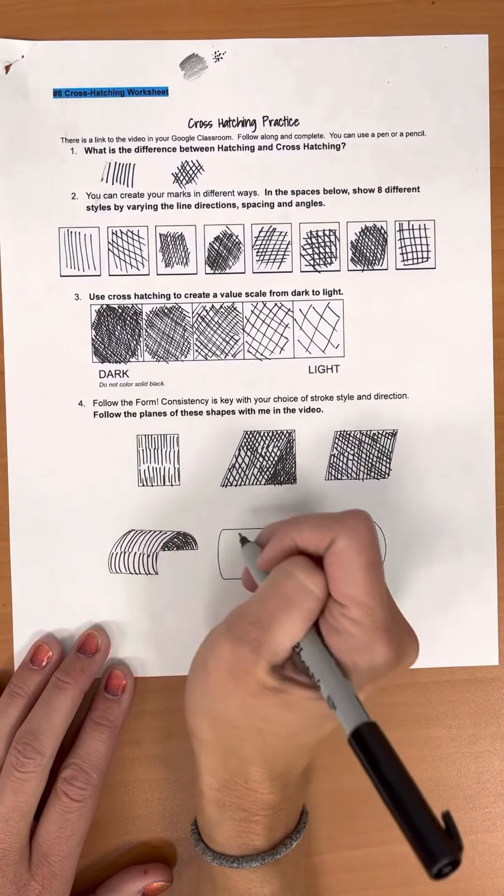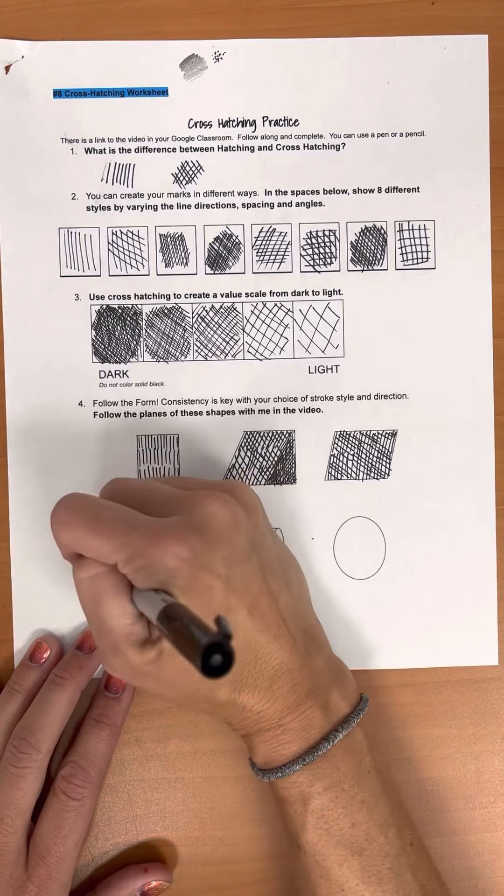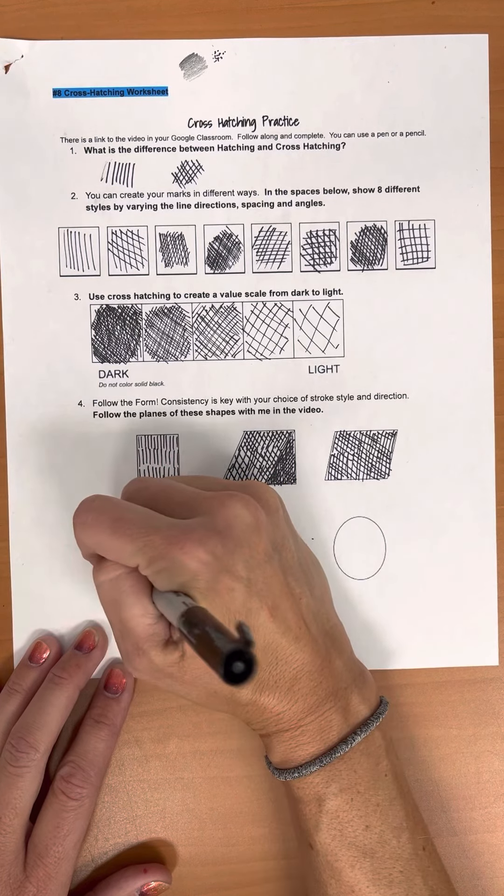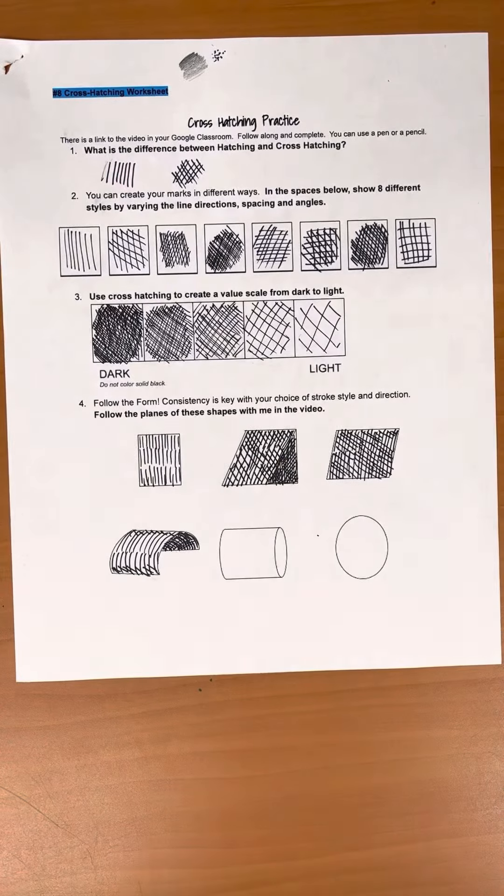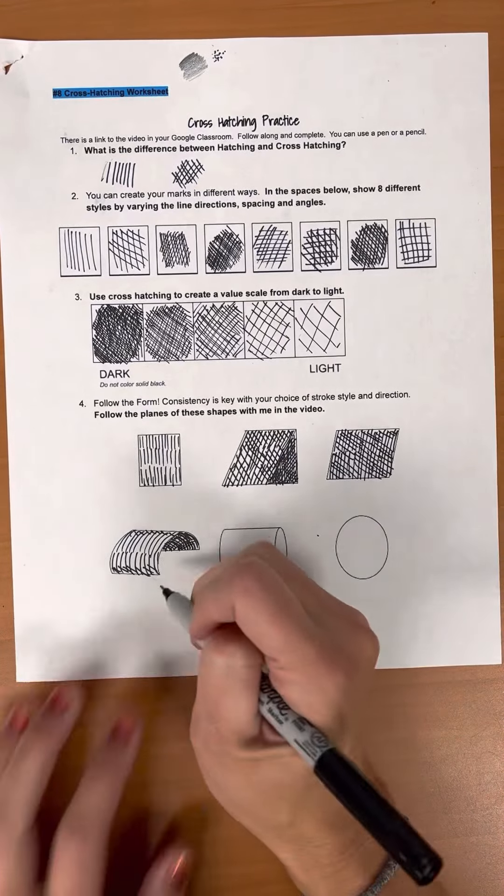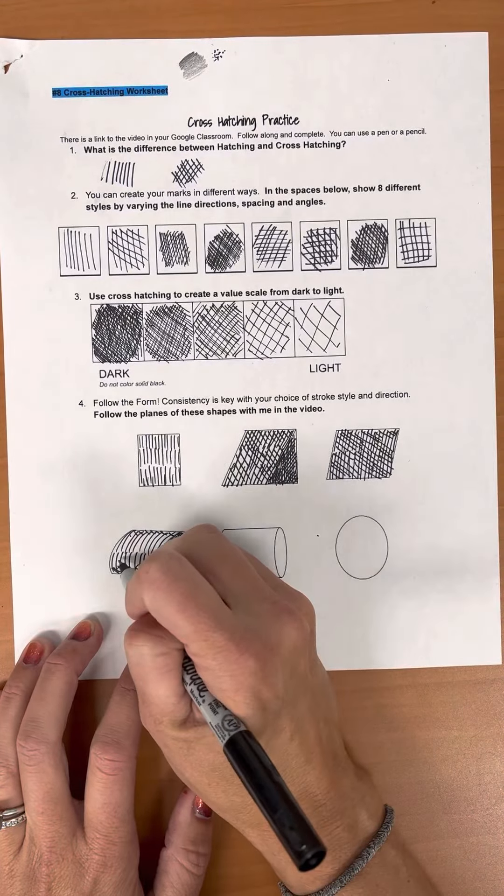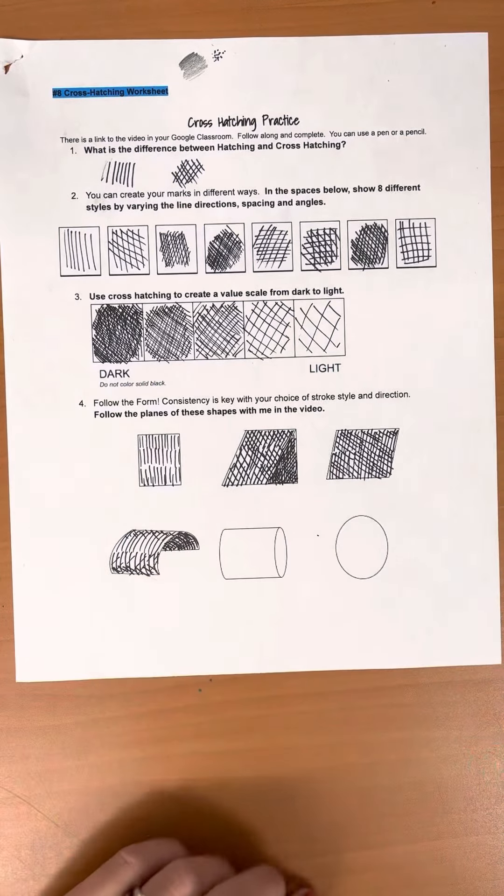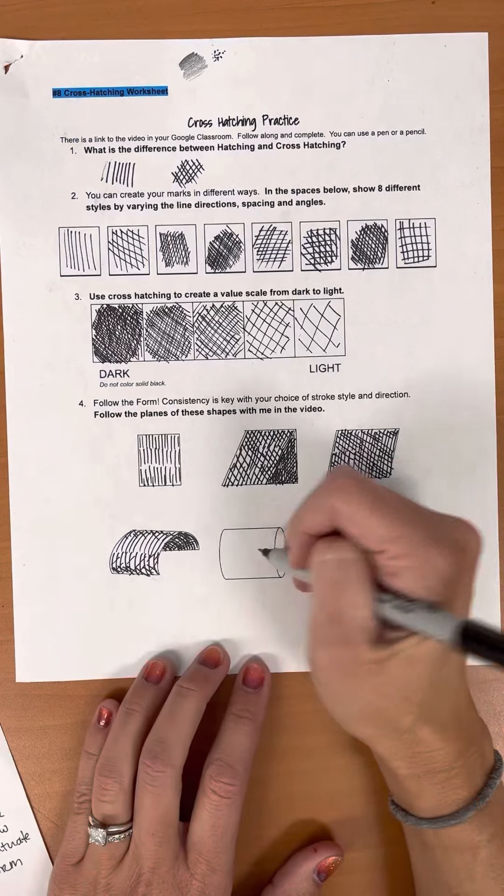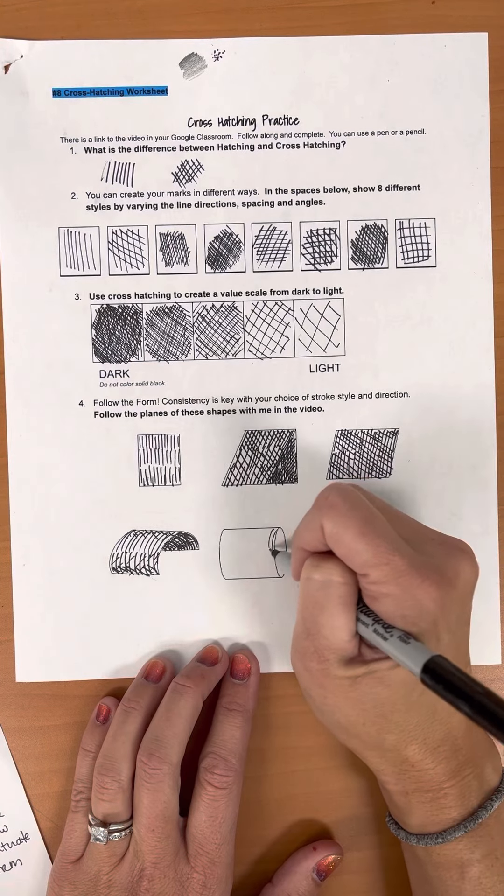You can go and cross hatch these if you want. You could leave them like this. If I wanted to add just a little shadow at the bottom, maybe a little shadow at the top, I can start to add a little bit of shading to that by adding a couple more lines. And then the same thing here. I'm going to follow this form. I'm going to make this one a little bit lighter.